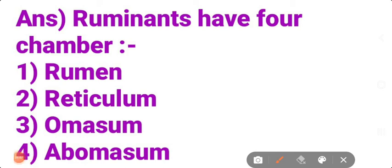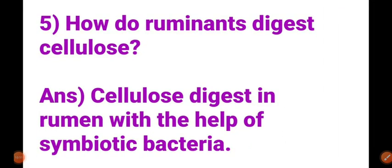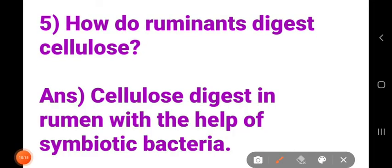Now next question — question number five: How do ruminants digest cellulose? Write with correct spelling — no spelling mistakes. Answer: Cellulose is digested in the rumen with the help of symbiotic bacteria. Write the correct spelling of symbiotic bacteria.